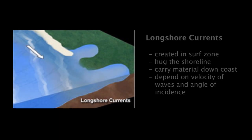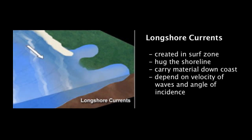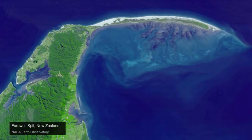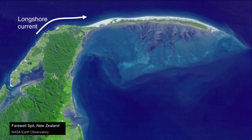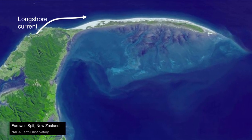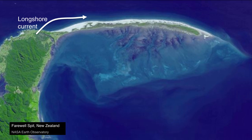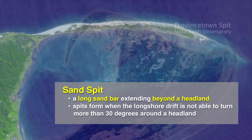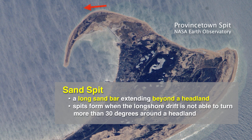Longshore currents flow parallel to the shore, carrying sand and material that is caught up in the surf zone. This material is transported along the shoreline but remains offshore. However, when the shoreline depth becomes too shallow, the current will slow down and not be able to suspend its load. Fast moving water will suspend particles but slow moving water cannot support the load. Therefore, it's not unusual to see a long sandbar or spit at the tip of a peninsula where the longshore current has trouble keeping up its speed as it rounds the bend.